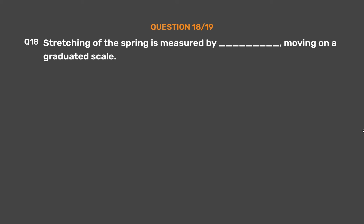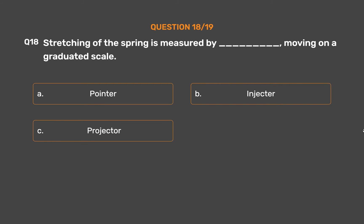Question number 18. Stretching of the spring is measured by blank, moving on a graduated scale. Option A: Pointer. Option B: Injector. Option C: Projector. Option D: None of these.